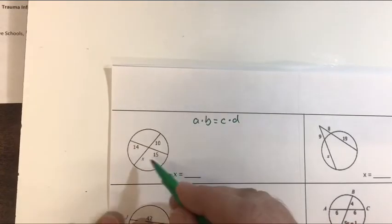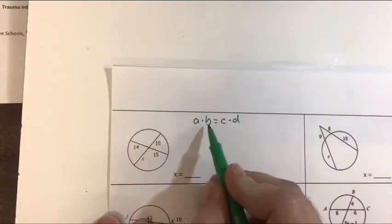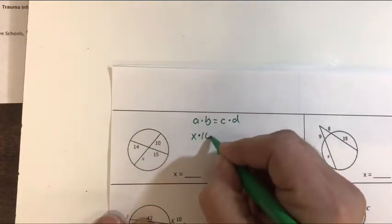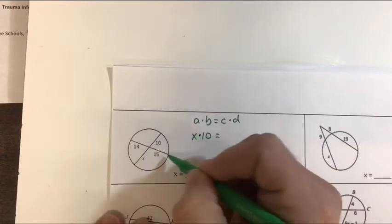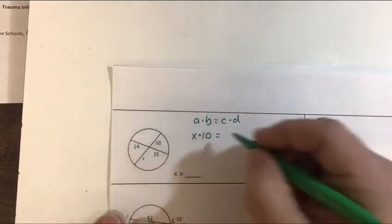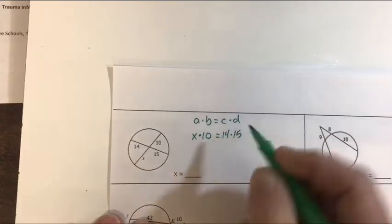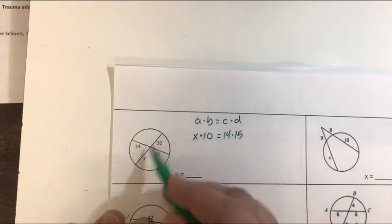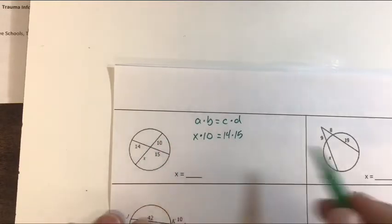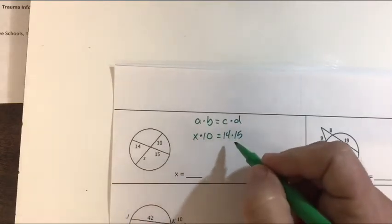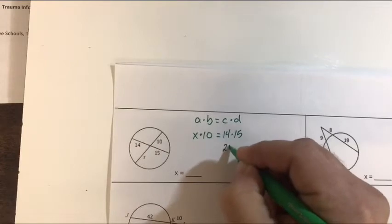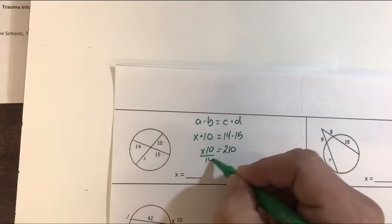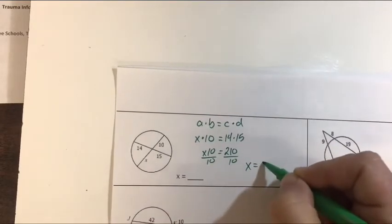It's A times B equals C times D. Well to solve this for X we're just going to set that up. A and B are two parts of the same chord. So that's X and 10 for one of them, and that should equal the product of the other two chords, 14 times 15. Now you could have flipped this equation around backwards and it would still work. So we just multiply. 14 times 15 is 210, and then this is just 10X. So we divide by 10 on both sides and X is 21.